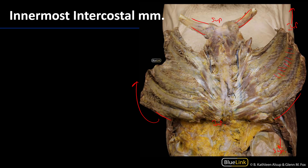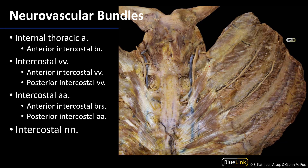There are also slips of the transversus thoracis muscle — you're not responsible for identifying it in this session, but it is helpful to see how the internal thoracic arteries and veins are found deep to this muscle. At a deeper level, with the innermost intercostal muscles removed from the intercostal space, we can see the internal intercostal muscles and the neurovascular bundles.